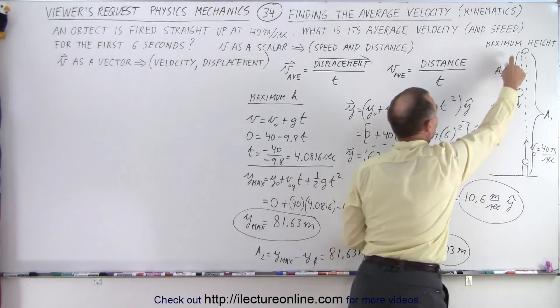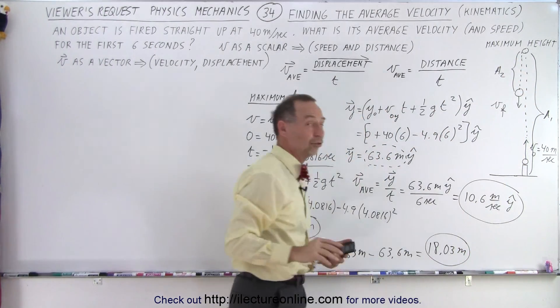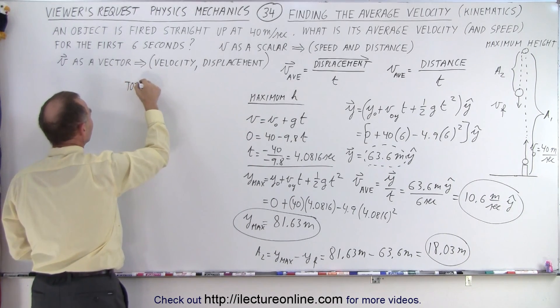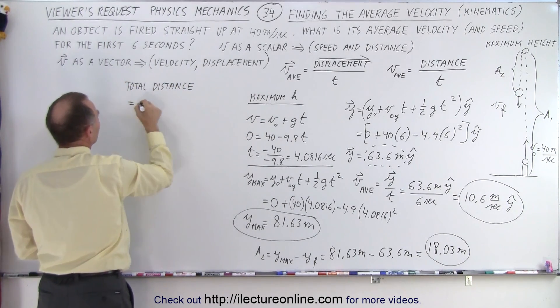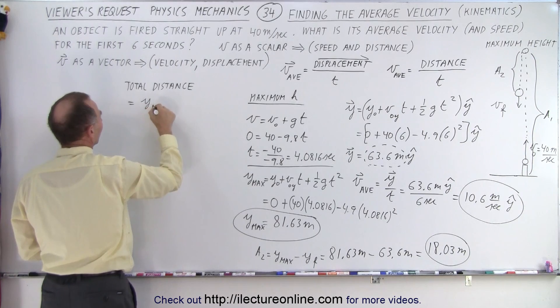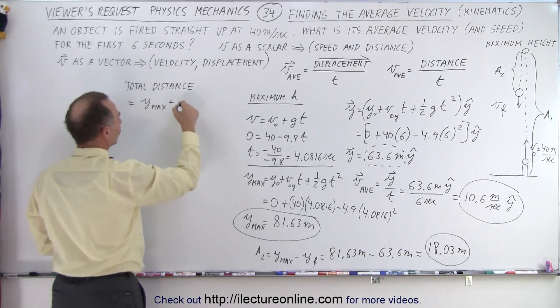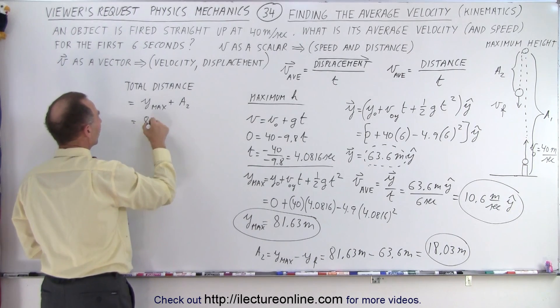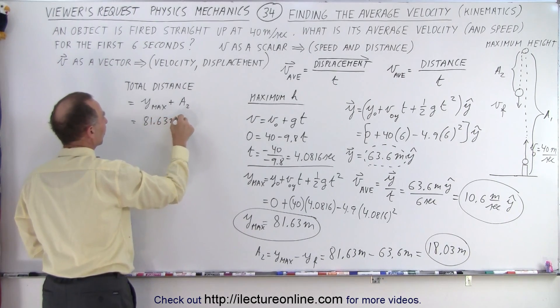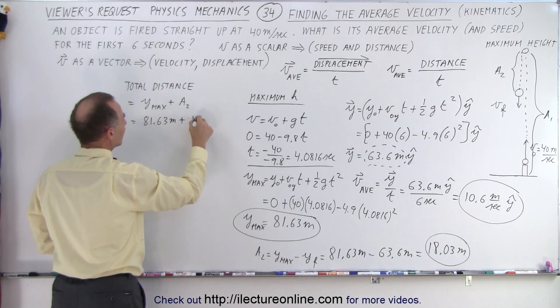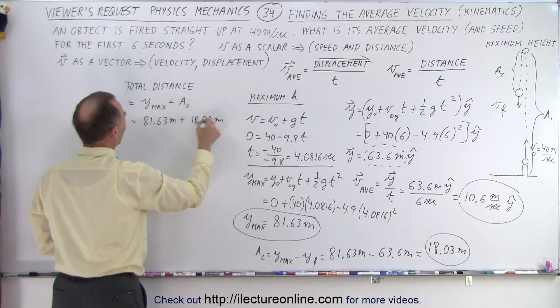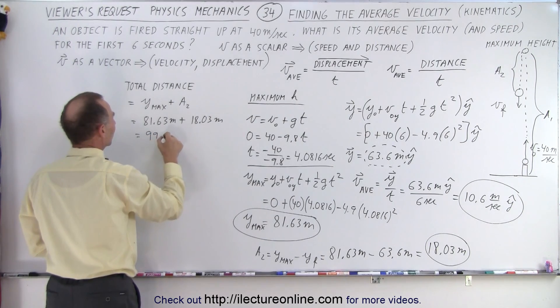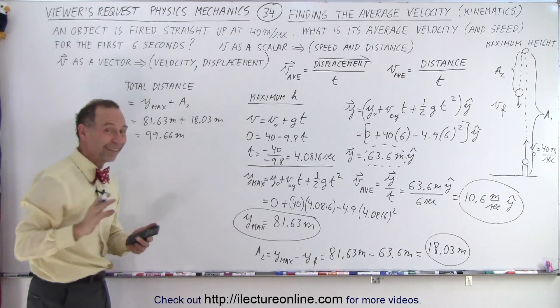So that's the distance from maximum height to its final position. So now we can calculate the total distance. So total distance traveled will be equal to y max plus A2. So this is equal to 81.63 meters plus another 18.03 meters, for a total of 99.66 meters. That's the total distance traveled.